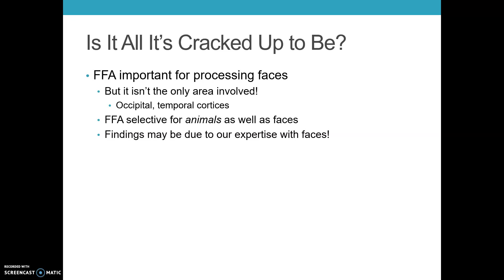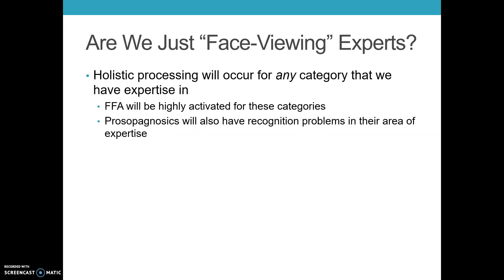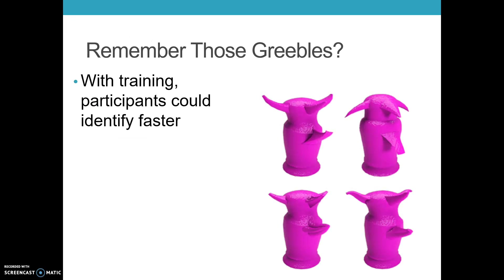But is the FFA all it's cracked up to be? No one area acts in isolation — the occipital and temporal lobes are also involved. Research has found the fusiform gyrus is also selective for animal faces. As a devil's advocate point, we've been exposed to human faces our whole lives, so maybe faces seem special simply because we're experts at recognizing them. If you become an expert in a category, you're more likely to engage in holistic processing — whether bird watching or car parts. So researchers suggested the fusiform gyrus would also be highly activated for those expert categories.